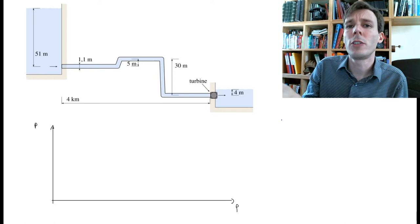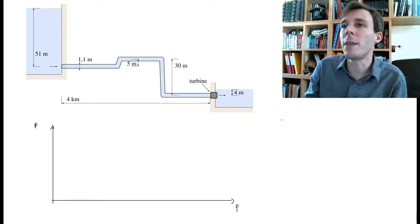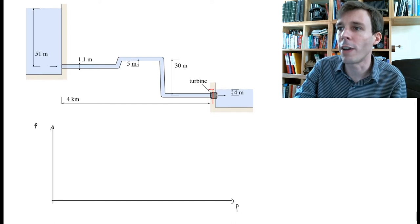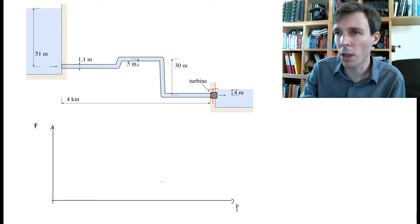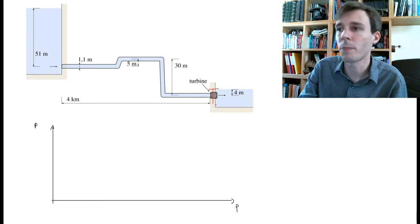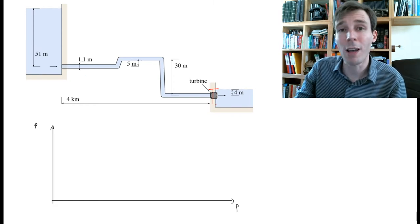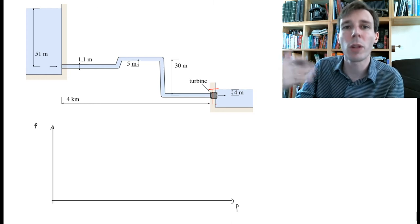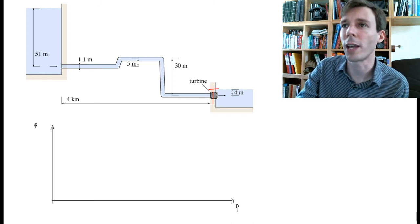We want to do this in two steps. The first step will be imagining that the turbine here is shut off and there is a valve which prevents water from flowing, and we'll plot the pressure distribution in this pipe in a static case. Then we'll open the valve and let the water flow and let the turbine extract power and plot the new curve.